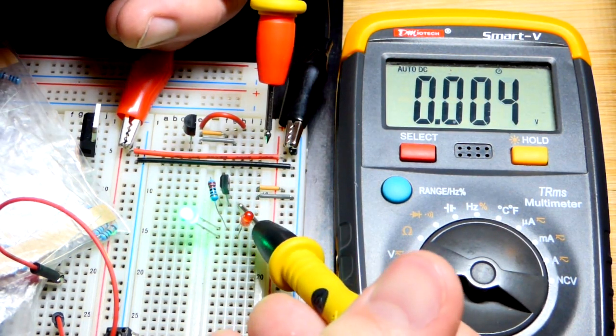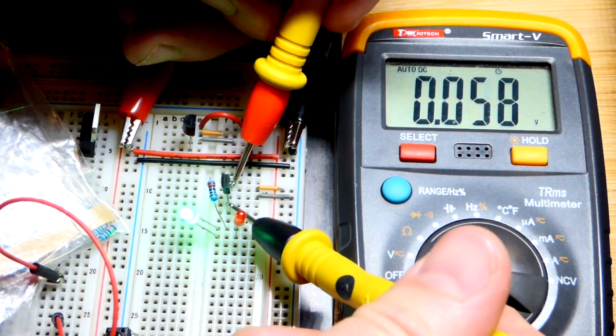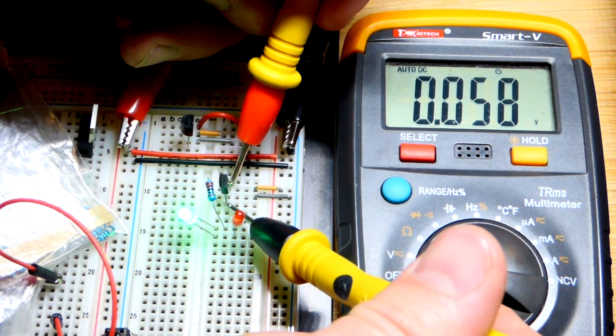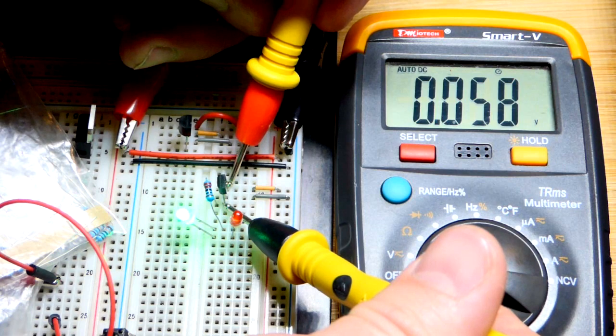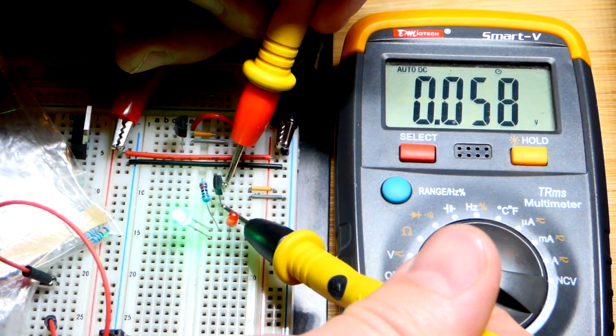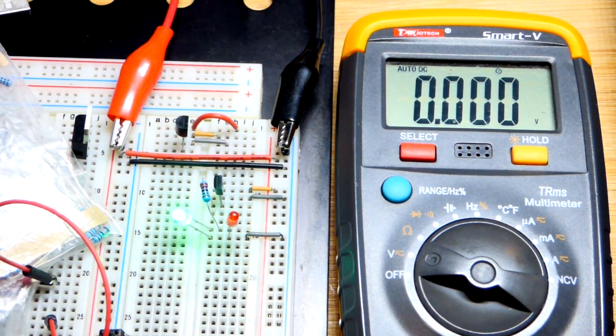You can also just go directly across the transistor. I accidentally shorted something out. But we can go directly across the transistor. It's reading about 0.058, so about 0.06 volts. Much less than any diode would do.